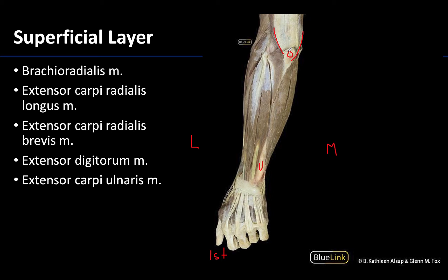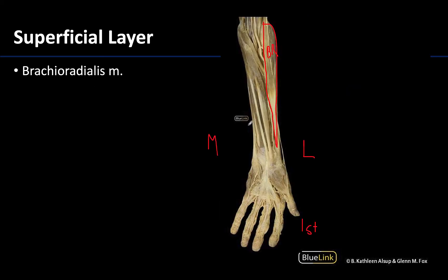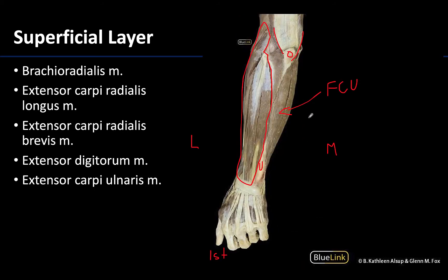The muscles of the superficial layer of the posterior compartment are more laterally located — lateral to the ulna right here. The muscles over on the medial side are going to be from the anterior compartment, like the flexor carpi ulnaris. You couldn't see its muscle belly very well from the anterior view, but you can see it a little better from this posterior view. It is more medially placed when looking at the posterior view.